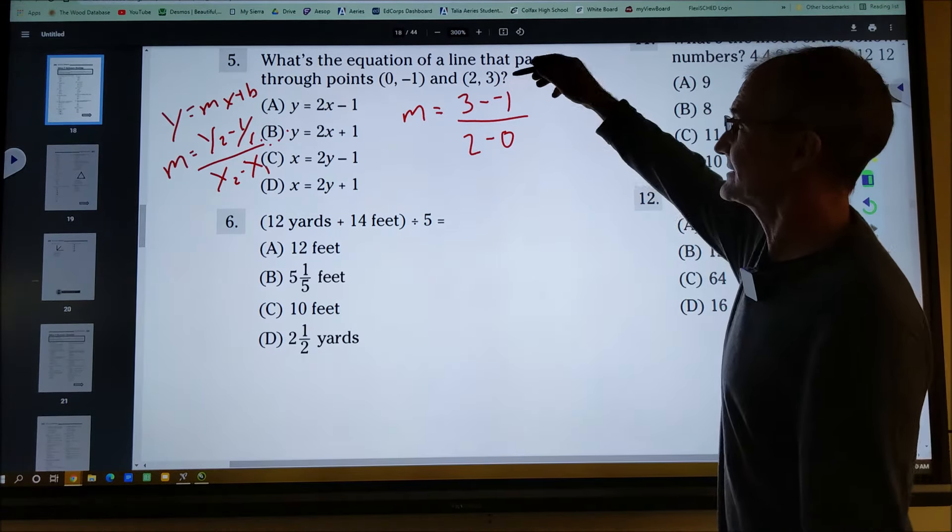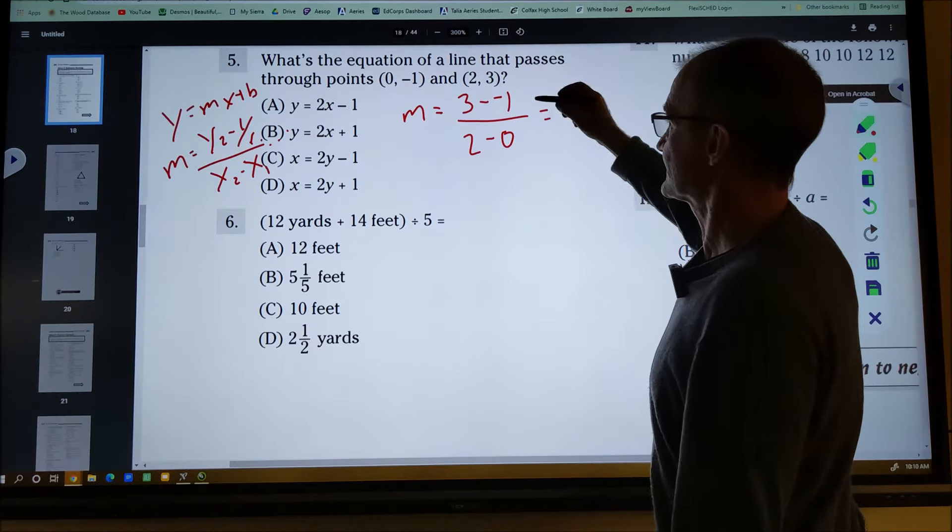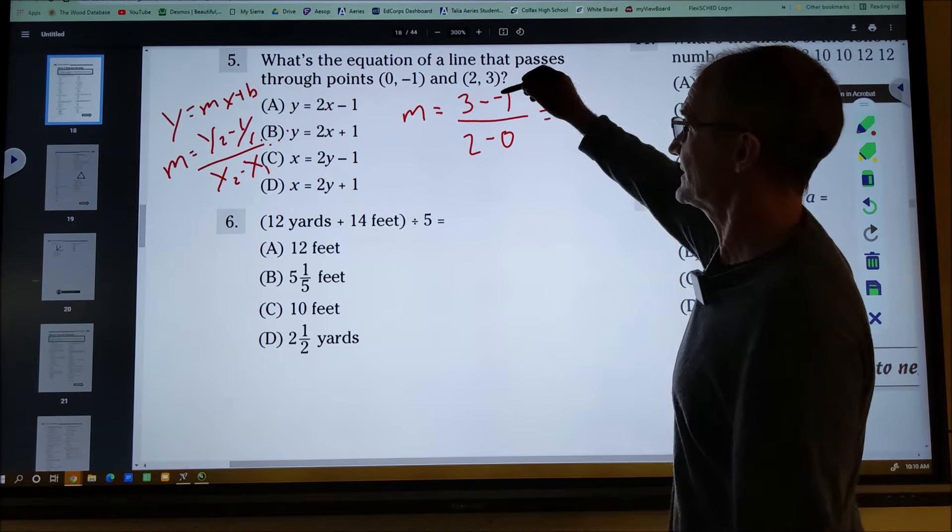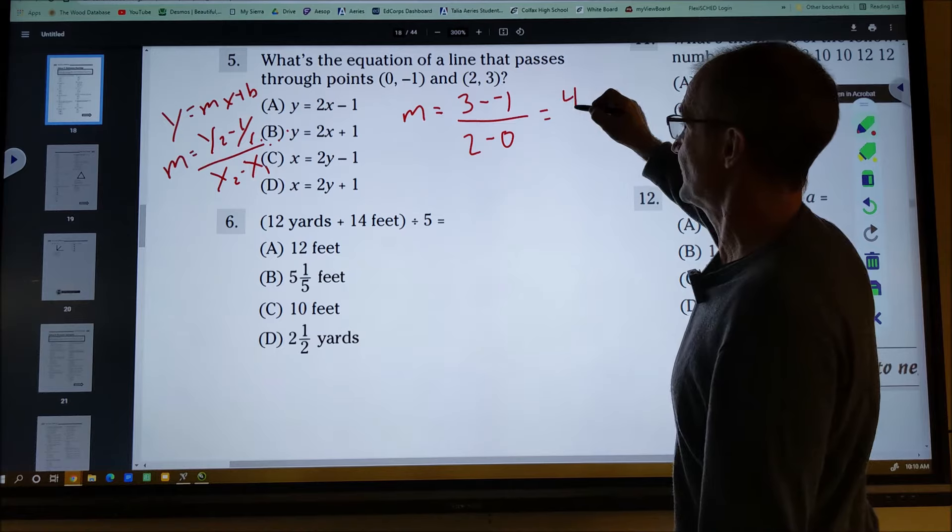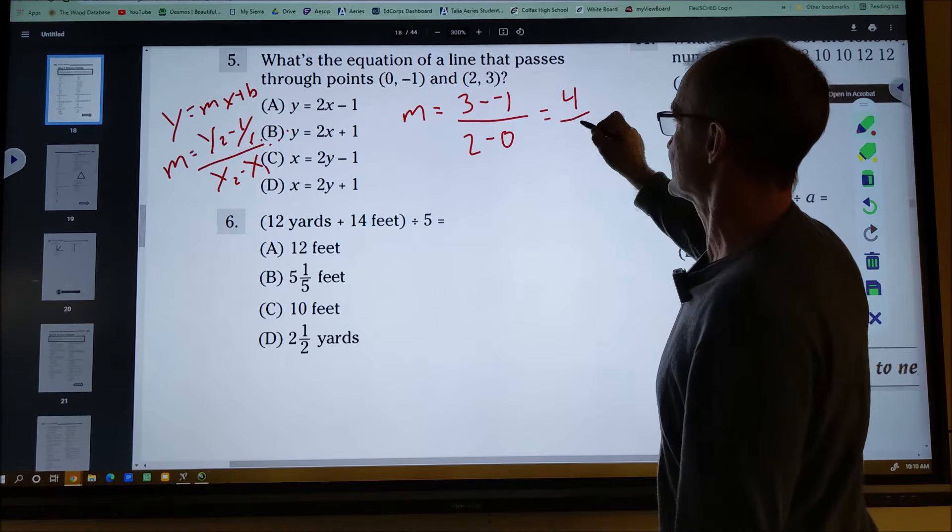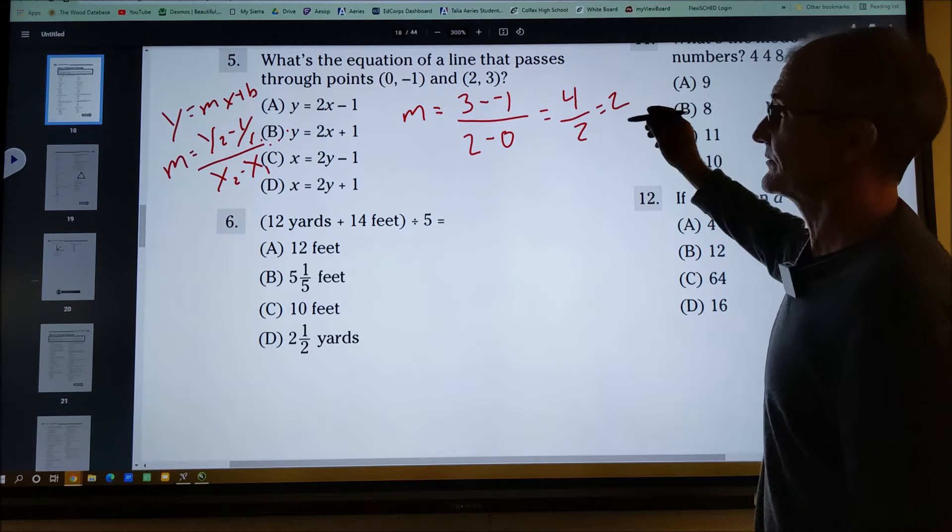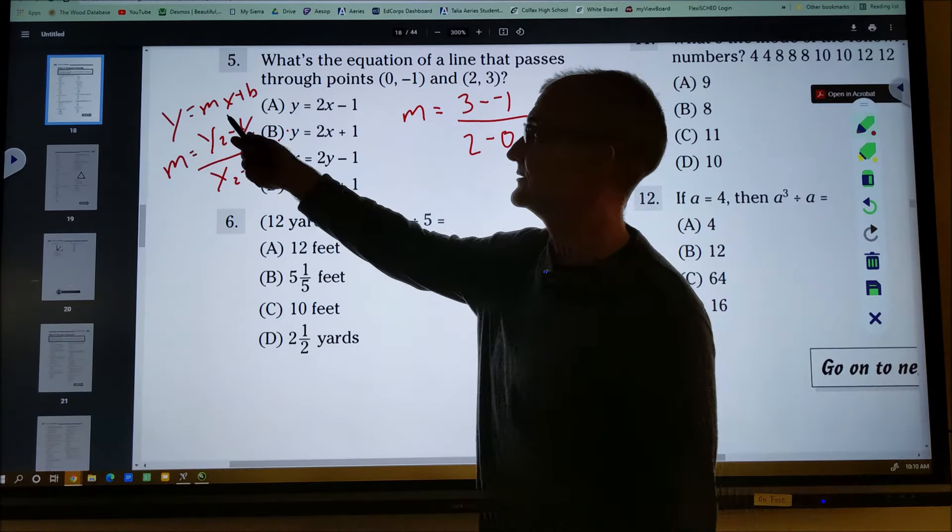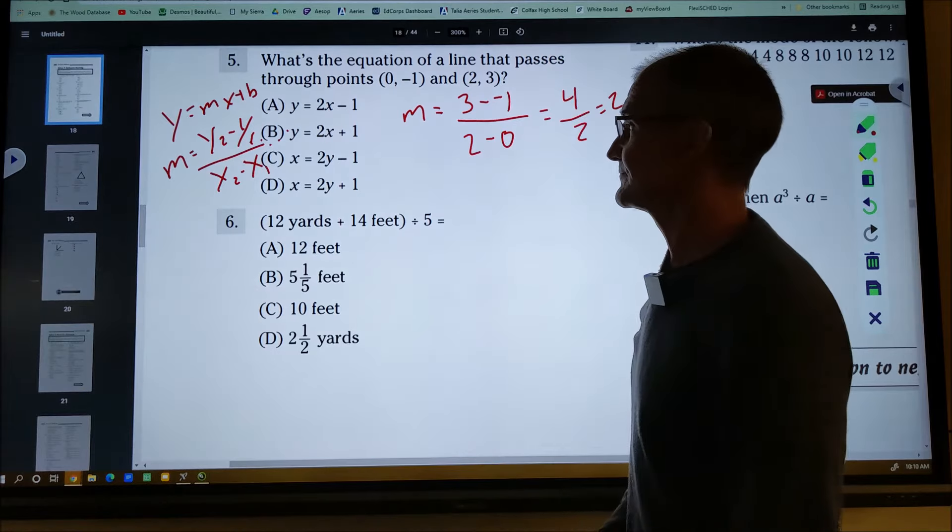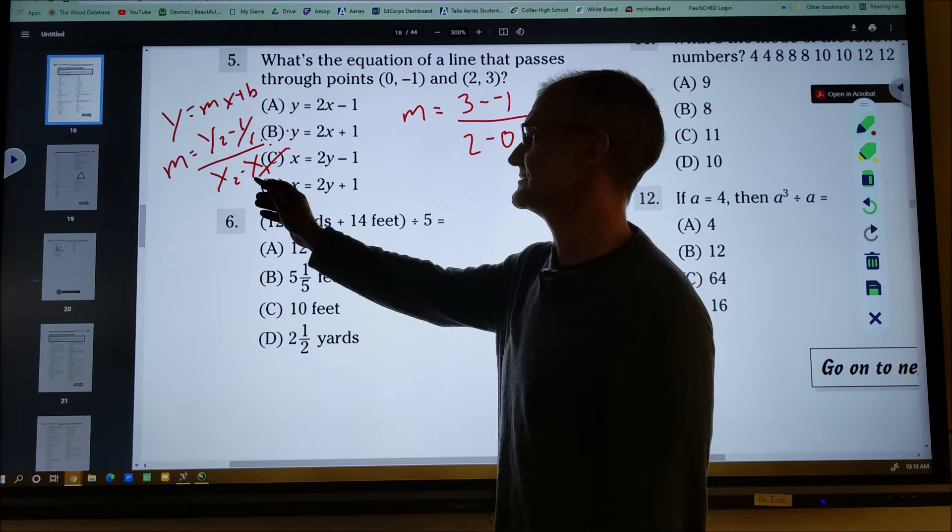So I have 3 minus a negative 1. That's going to actually turn it into a plus. Minus a negative is a plus. That's 4. 2 minus 0 is 2. 4 divided by 2 is 2. So my slope is 2. So m here is 2. I have y equals 2x plus b. I can eliminate these two answers.